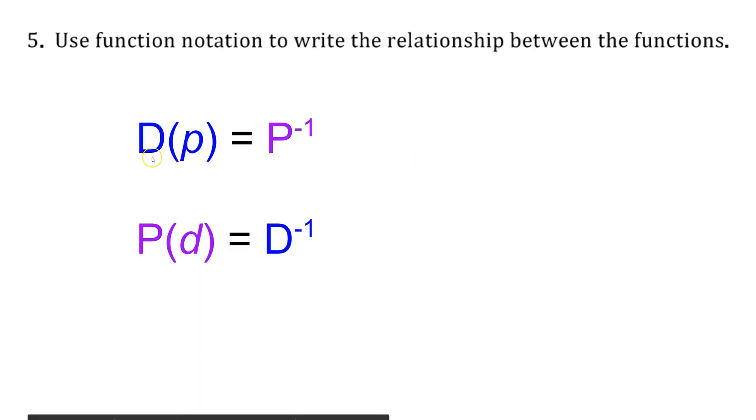So in function notation we would say that D of P, Carlos's function, is equal to P inverse. And P of D, Clarita's function, is equal to D inverse. And that's this to the negative 1 power here that you see in both of these means inverse.